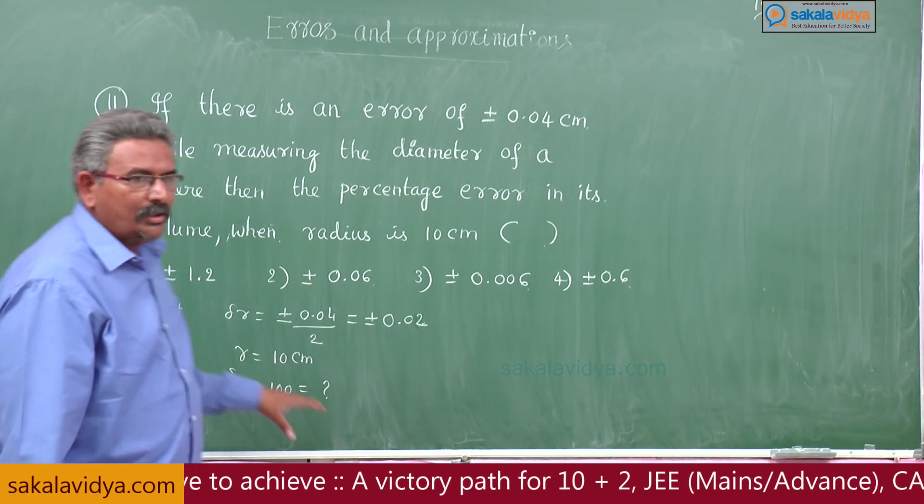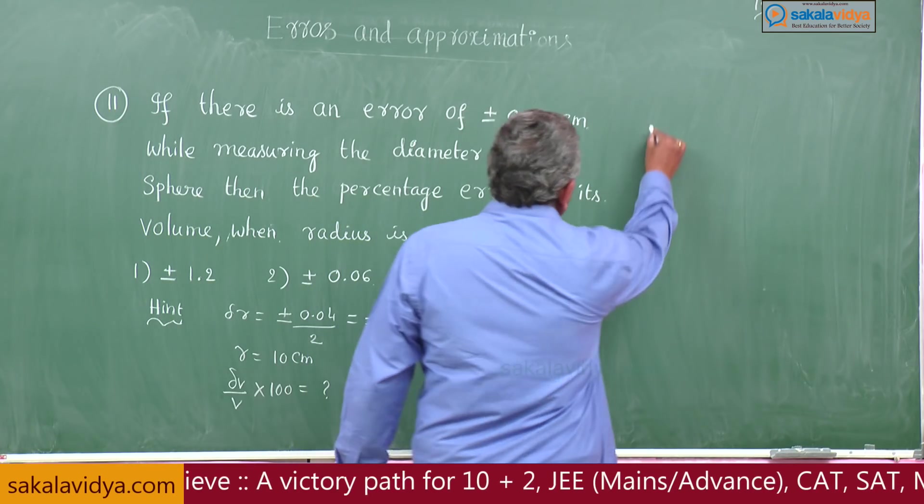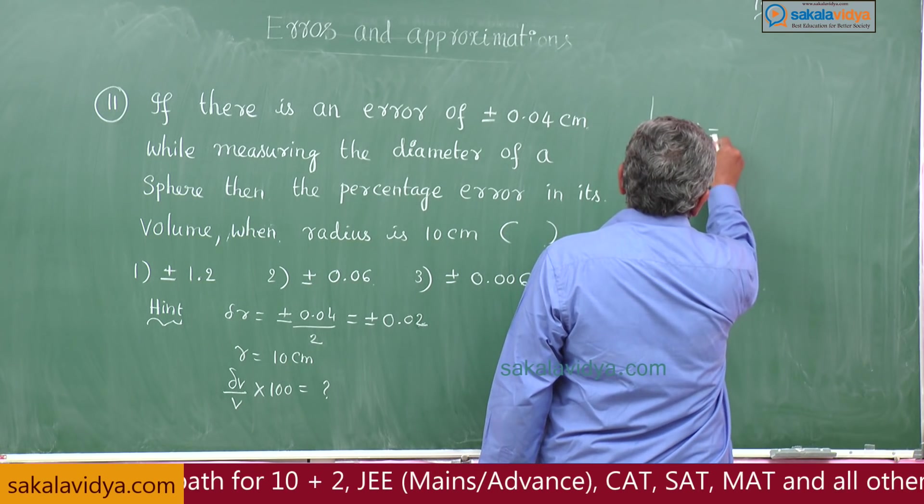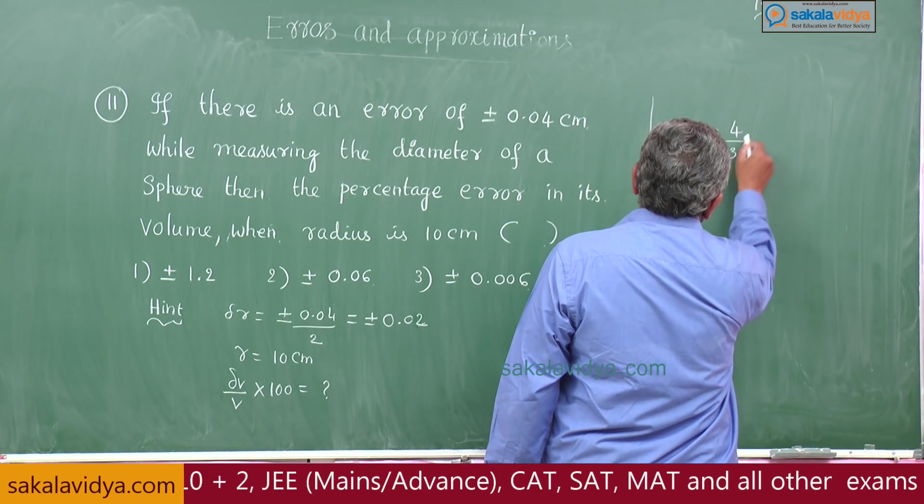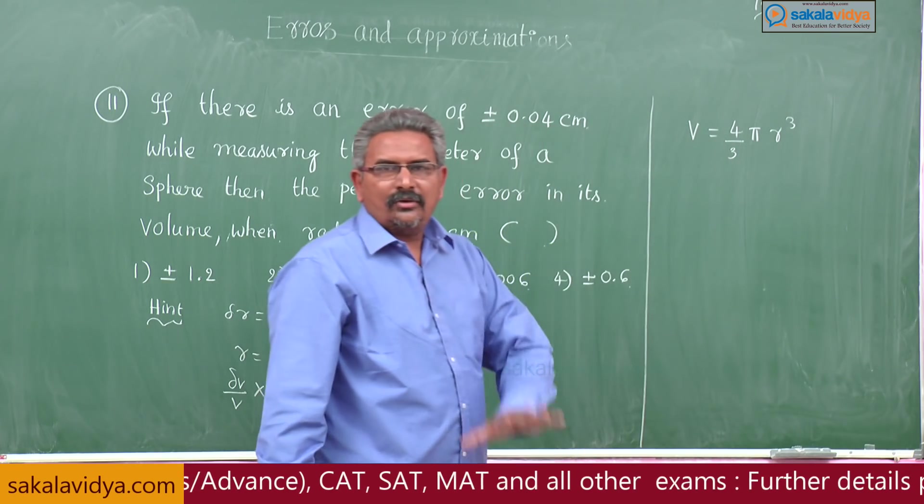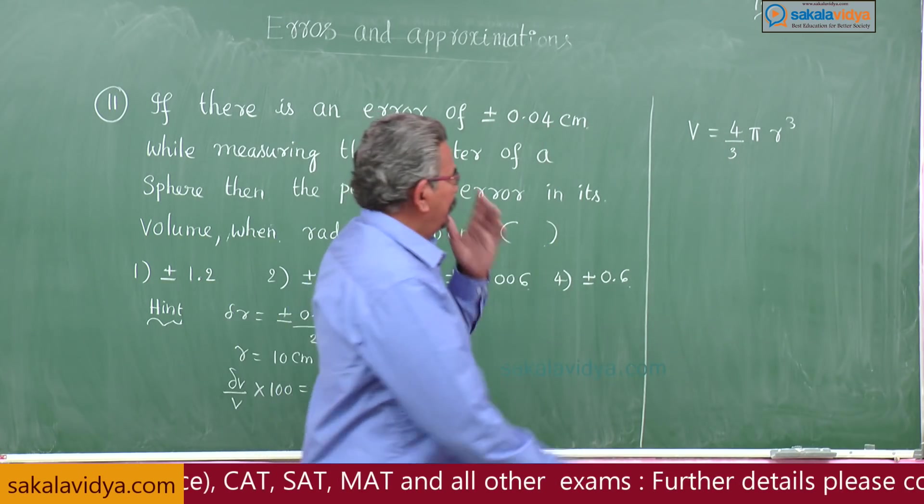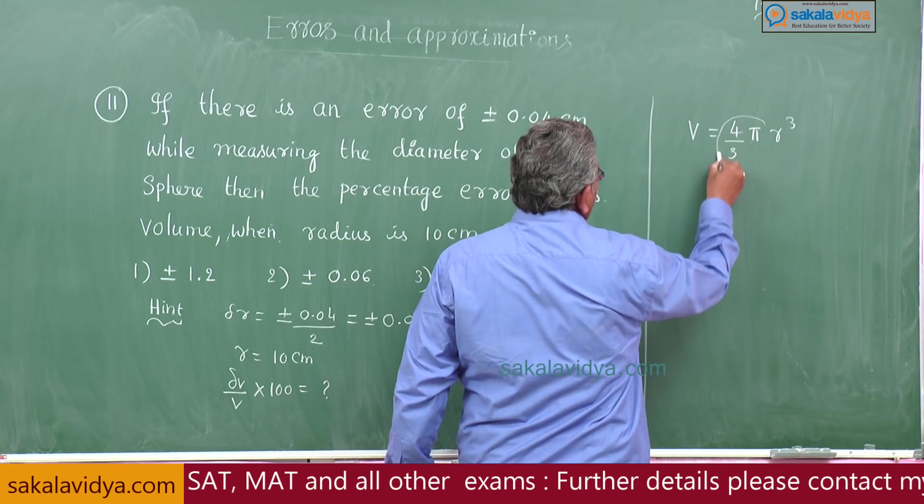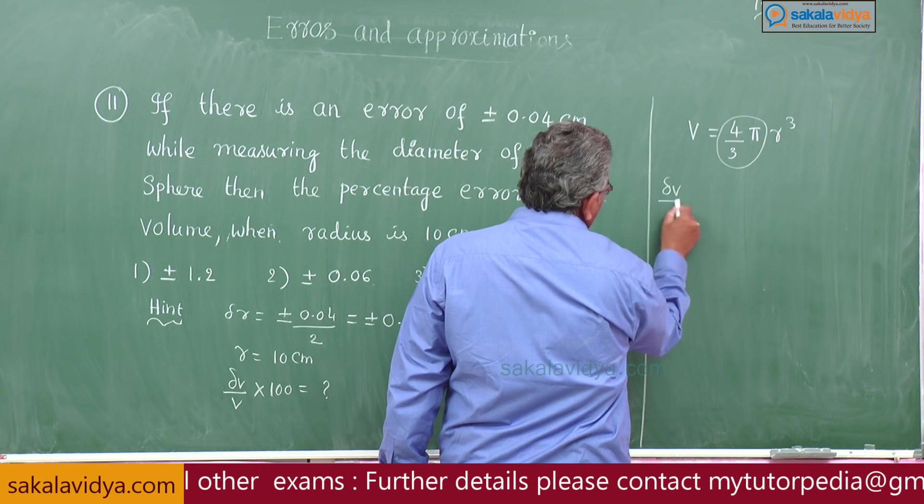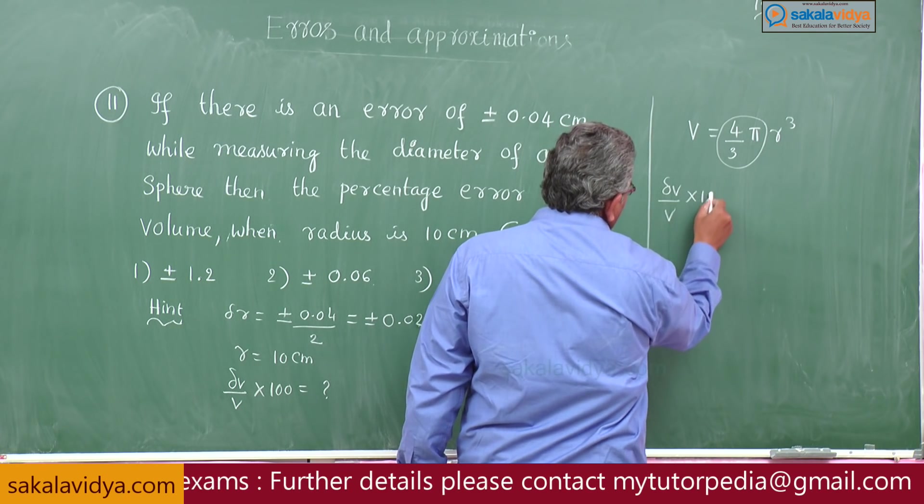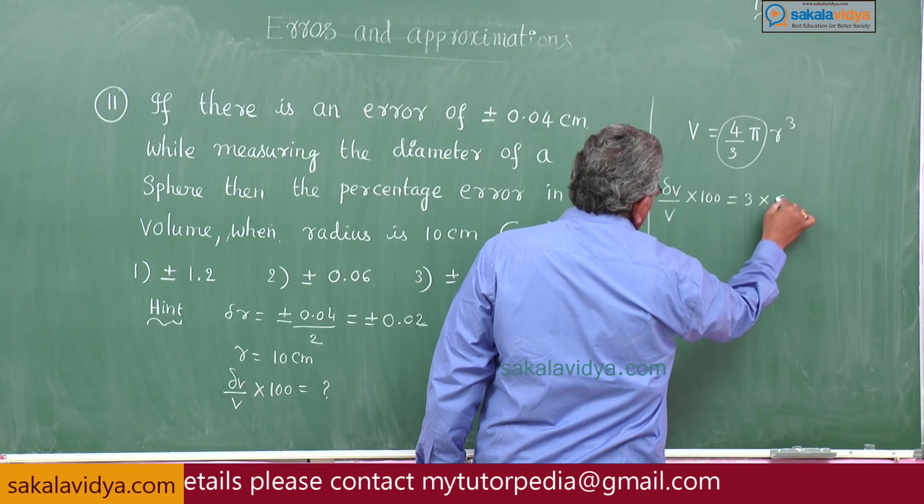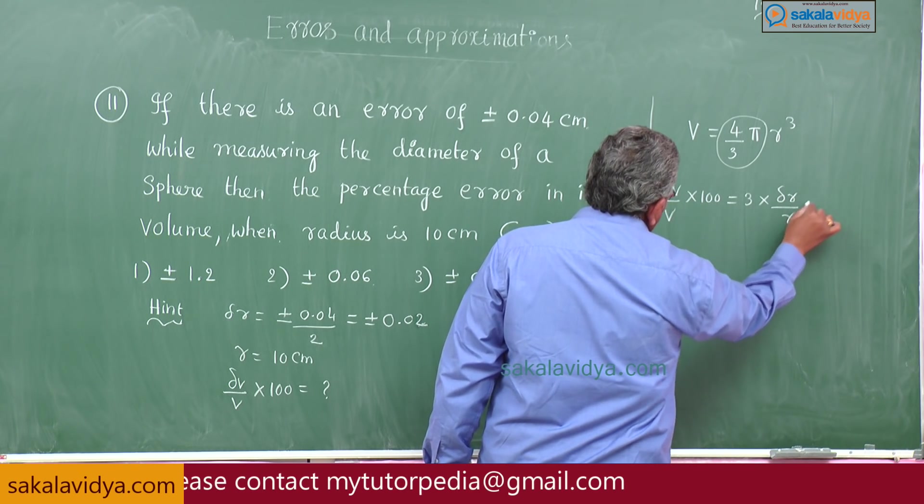What is the volume of the sphere? We know the formula: V is equal to 4 by 3 pi r cube. Now, using our shortcut, this 4 by 3 pi is constant, leave it. This can be written: delta V by V into 100 is equal to dimension of r is 3, 3 times delta r by r into 100.